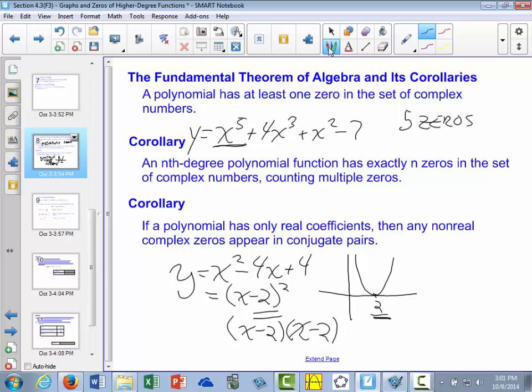Remember that double zeros and even multiple zeros will show this characteristic where the graph touches the x-axis and then bounces back in the same direction it came from originally. So we go down, we touch, and then we go back up.